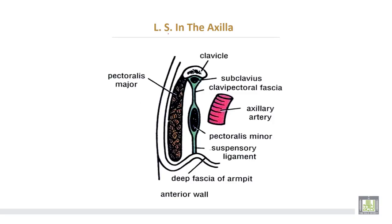This is a longitudinal section of the axilla. The anterior wall is formed by a first layer of pectoralis major muscle, and a second layer from above downwards: subclavius muscle, then clavipectoral fascia, then pectoralis minor, and suspensory ligament of the axilla.